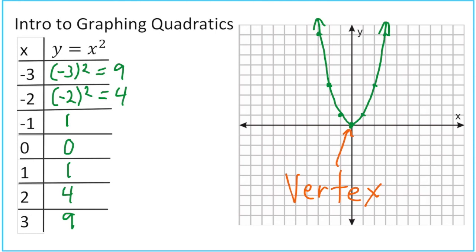Notice from the vertex, how do I get to the first point on the right? I go over 1, up 1. Over 1, up 1. How do I get to the second point on the right or left? If I go back to the vertex, notice if I go over 2, I end up going up 4. That is how you can see the x squared.